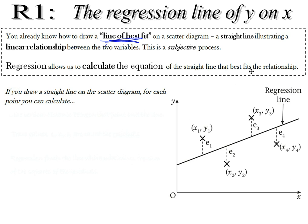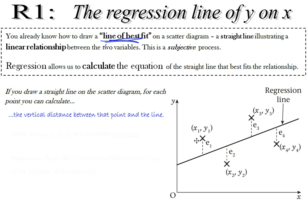Take this simplified scatter diagram between two variables — only four points on it, but it gives you the idea. If we take any given line, we can work out the vertical distance between each point we've plotted and the line. These allow us to work out the best line — the line of best fit — which we call the regression line.